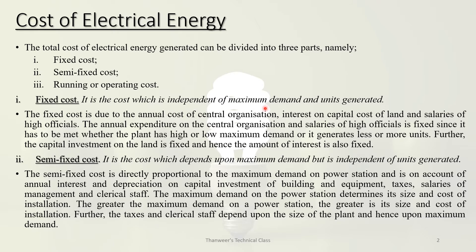What are fixed costs? One component is maximum demand. The maximum demand is related to the unit generator. The maximum demand represents the maximum cost of electrical energy — it corresponds to the maximum electrical components connected to the supply.